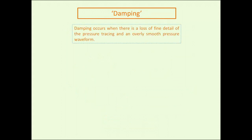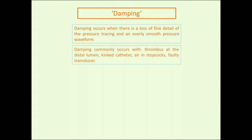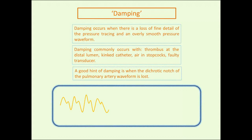One final issue is dampening of the pressure wave, which occurs when there's a loss of fine detail or an overly smooth pressure waveform. Causes include thrombus at the distal lumen, a kinked catheter, air in the stopcocks, or a faulty transducer. A good hint is when the dicrotic notch of the pulmonary arterial waveform is lost. You can flush the catheter, try to get air out of the system, and reevaluate. It may require placement of a new catheter.